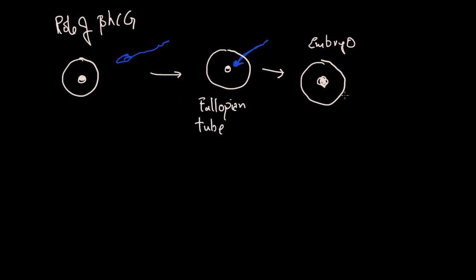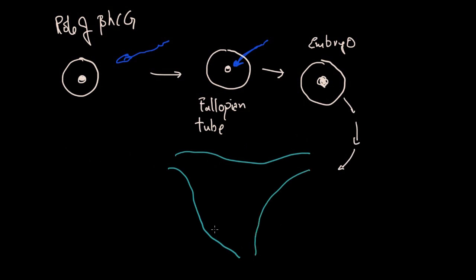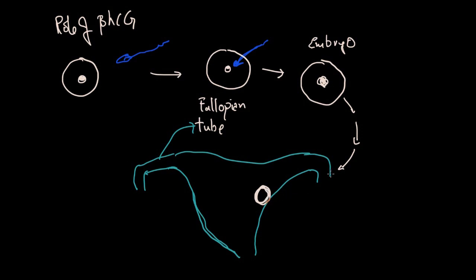This embryo will gradually grow into a fetus or baby. The embryo gradually settles down in the uterus — this is the uterine cavity, and these are the fallopian tube openings. The embryo settles down on the walls of the uterus, and this particular process is called implantation.